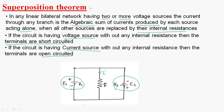Let us consider I1 is the current due to source E1, and I2 dash is the current flowing through this branch due to the other source. Then the total current in this branch is the algebraic sum: I1 dash plus I2 dash, or I1 dash minus I2 dash if I2 is flowing in the opposite direction.